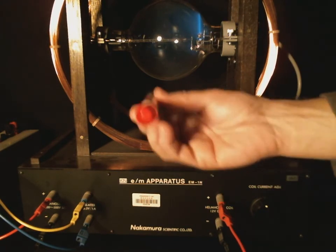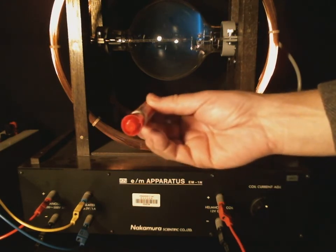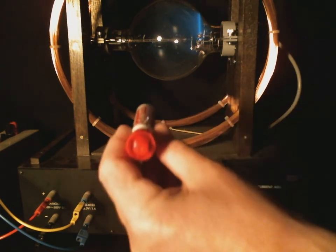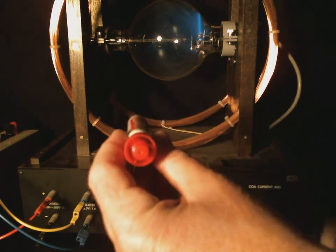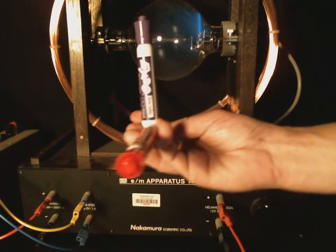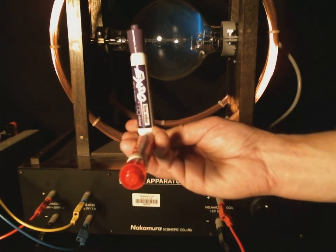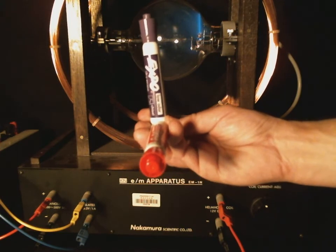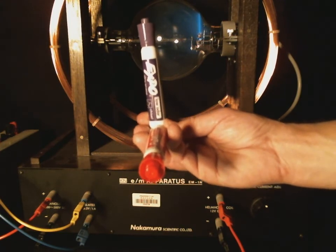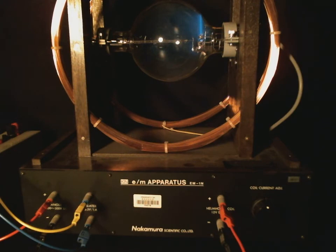If the magnetic field is coming out of the screen, and the velocity vector of the beam is the purple pen, which is pointing up, I want you to predict which way the force will be on the electrons. And remember that they're negatively charged, so that flips the result.